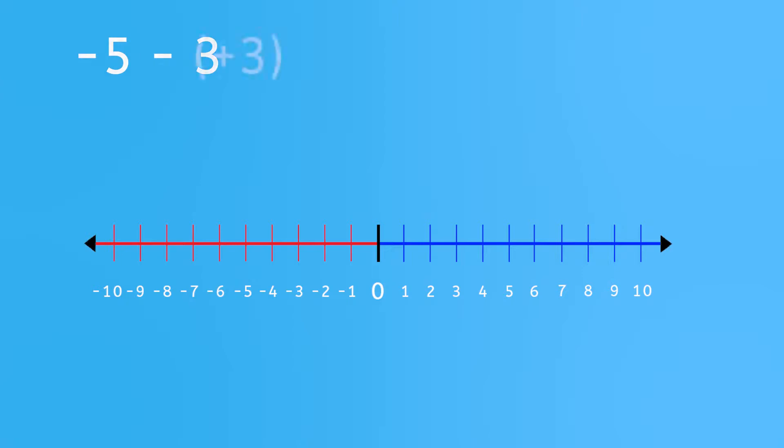This can be rewritten as negative 5 minus parentheses positive 3 because we don't want to confuse it with a subtraction sign for a negative symbol. So we're subtracting positive 3 from negative 5.